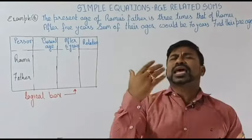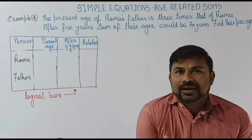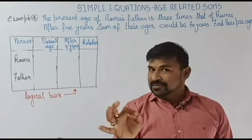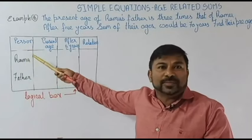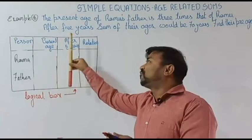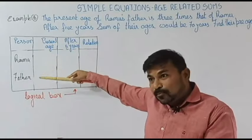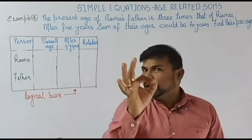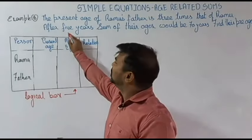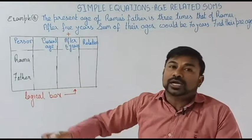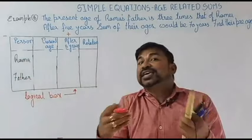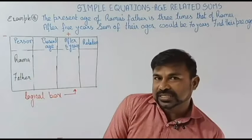To help you understand better, I am setting up a logical box — a tricky way to deal with any age-related sum. I am taking the two persons: Ramu and his father. We deal with the present age and the age five years later. If the problem says 'after,' we add; if it says 'before' or 'ago,' we subtract.